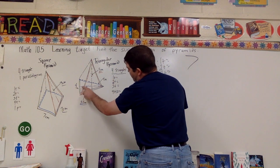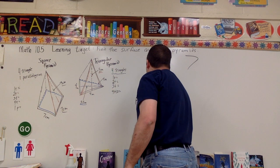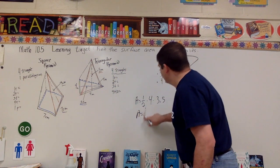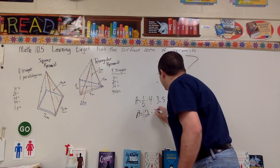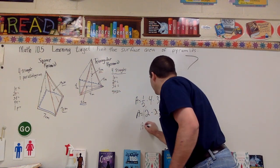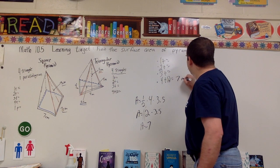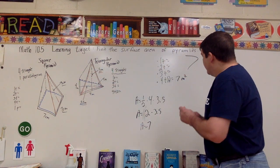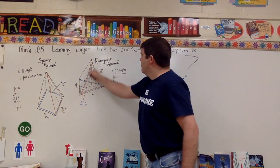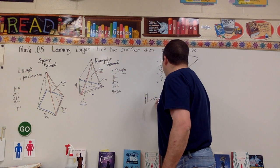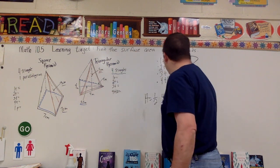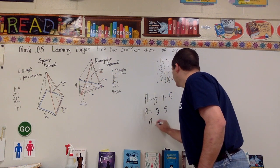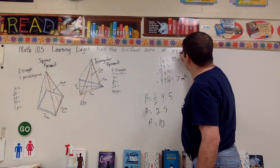The base triangle has a base of four and the given height is 3.5. Area equals one-half times four times 3.5. One-half of four is two, and two times 3.5 is seven. So the area of the base triangle is seven meters squared. Now for one of the side triangles: area equals one-half times base of four times height of five. One-half of four is two, and two times five is ten. So each side triangle is ten meters squared.